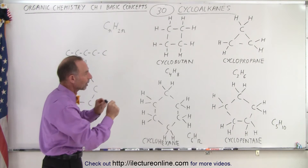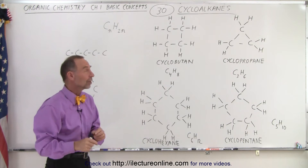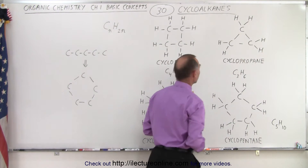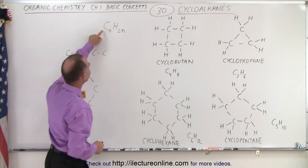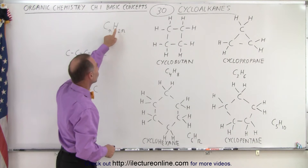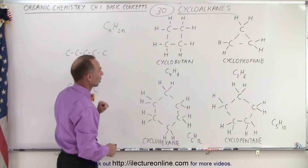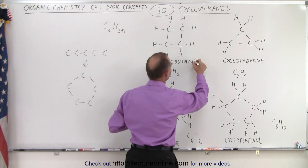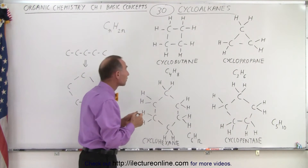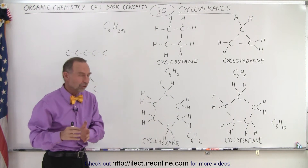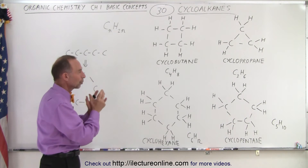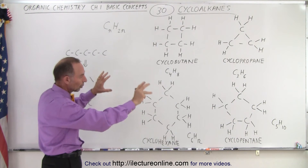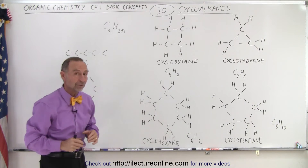They all have single bonds between the carbons, and in each case every carbon has two hydrogens. The general formula would be CnH2n — there's always twice as many hydrogens as there are carbons in these cycloalkanes, and these are the simple forms of them.